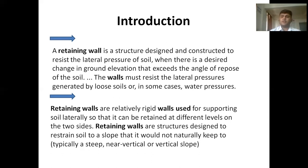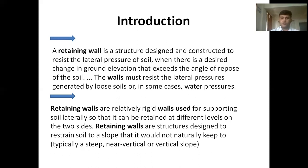There are different types of structures — in road construction, building construction, and bridge construction — where retaining structures can be used. Retaining walls are rigid walls used for supporting soil laterally so that it can be retained at different levels on two sides. They are structures designed to restrain soil to a slope that it would not naturally keep.